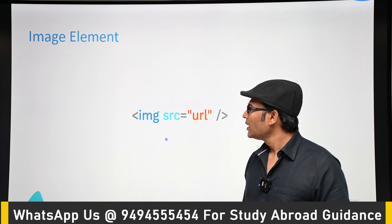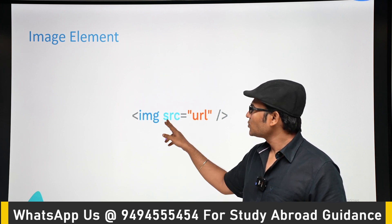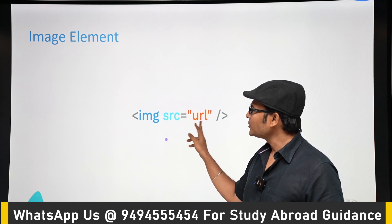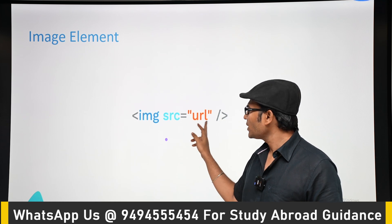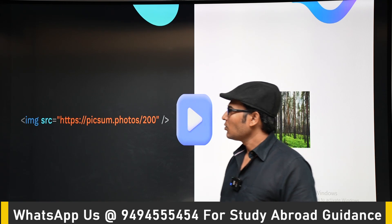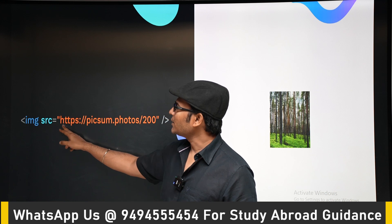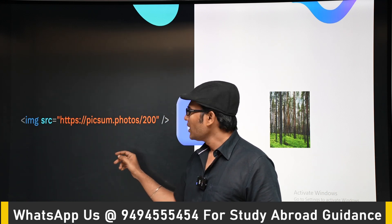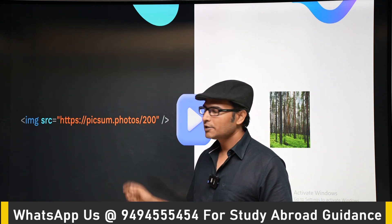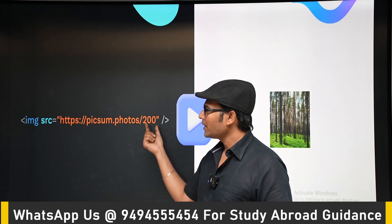The image tag has a few attributes. One is called 'src' (source), where you give the location — the URL — of the picture you want to embed. For example, if you take a link from the internet and append '/200', it means you want the picture to be 200 by 200 pixels in size, and you get a 200x200 image.